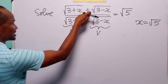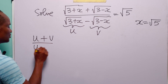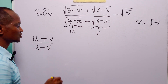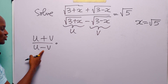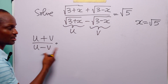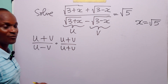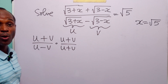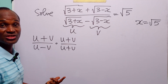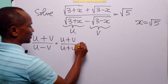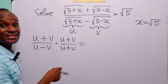Going back to our substitutions, the left hand side is (u plus v) divided by (u minus v). What we are going to do is multiply both the numerator and the denominator by the conjugate of the denominator, which is (u plus v). Notice that this divided by itself is equal to 1, so we have not changed the quantity in any way.